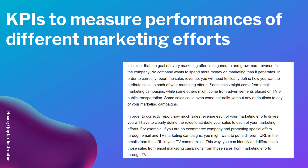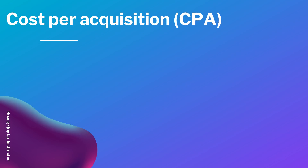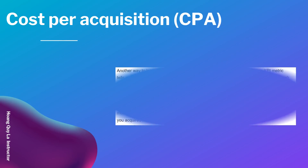In order to correctly report how much sales revenue each of your marketing efforts drives, you will have to clearly define the rules to attribute your sales to each of your marketing efforts. For example, if you are an e-commerce company promoting special offers through email and TV marketing campaigns, you may want to put a different URL in the emails than the URL in your TV commercial. This way you can identify and differentiate those sales from email marketing campaigns from those sales from TV.